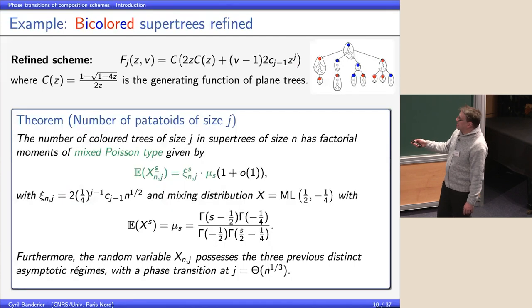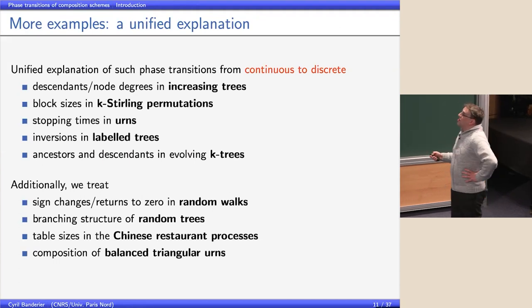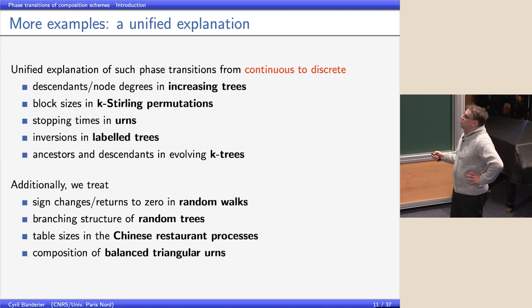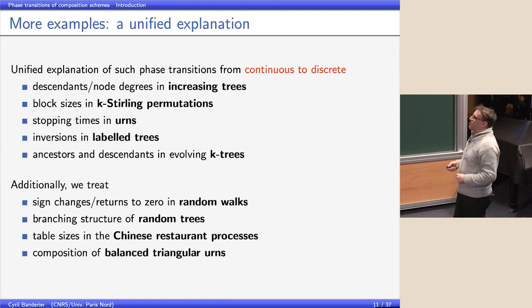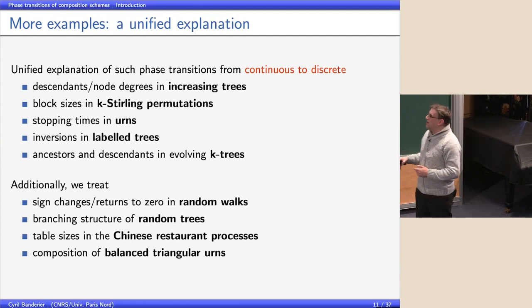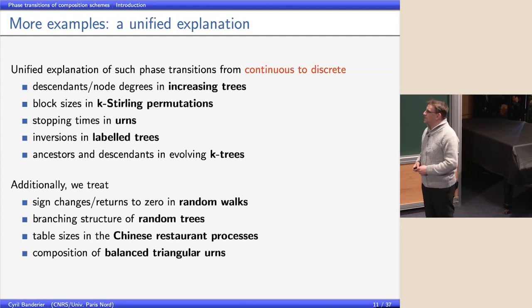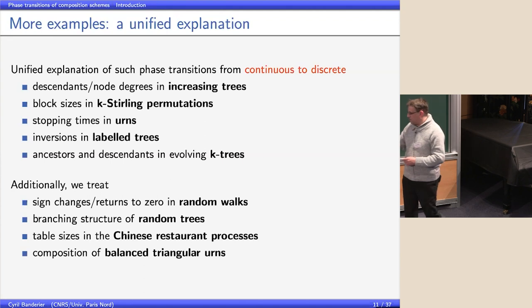You can do this for many other structures. For example: the number of descendants of nodes of some degree in increasing trees; block sizes in variants of Stirling permutations; pin times in urns; the number of inversions (labels in different orders) in labeled trees; ancestors and descendants in variants of k-trees; sign changes or returns to zero in lattice paths; the size of tables in Chinese restaurant processes; and stuff related to Pólya urns.